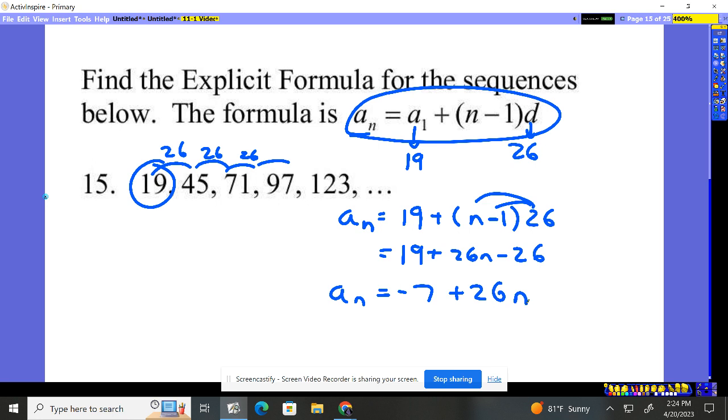...is if we want to know the hundredth term, I can simply plug in 100. We have 26 times 100, which would be 2,600, and then subtract 7, which is 2,593. That would be our hundredth term.